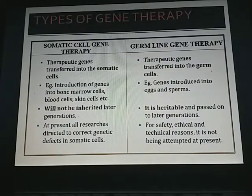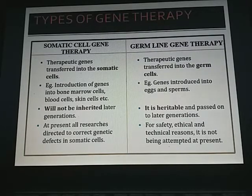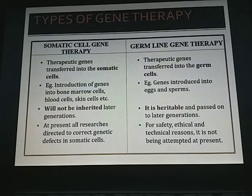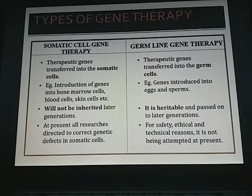There are two types of gene therapy: somatic cell gene therapy and germline gene therapy. In somatic cell gene therapy, therapeutic genes are transferred into somatic cells. In germline gene therapy, the therapeutic genes are transferred into germ cells.